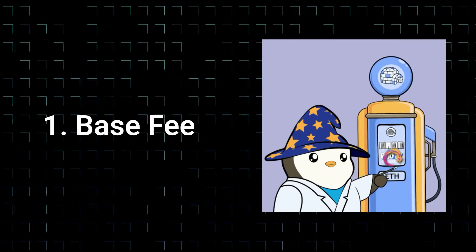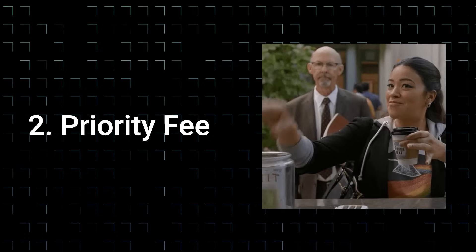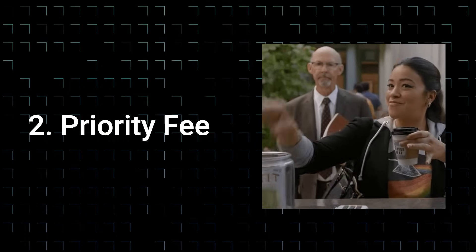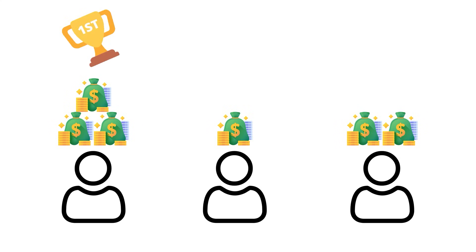Ethereum gas fees consist of two components: base fee, which is the amount the transaction sender must pay to make the transaction eligible to be included in a block, and priority fee, which is a tip that the sender can add on to incentivize validators to include their transaction faster. So if the Ethereum network gets congested, validators will include transactions with the highest priority fee. This is one of the reasons why gas fees on Ethereum are dynamic and become more expensive when the network gets congested.